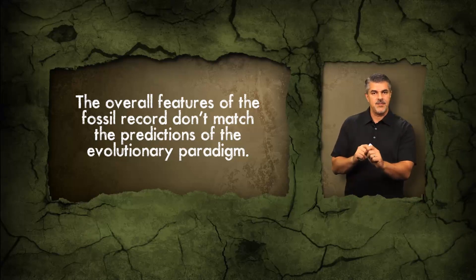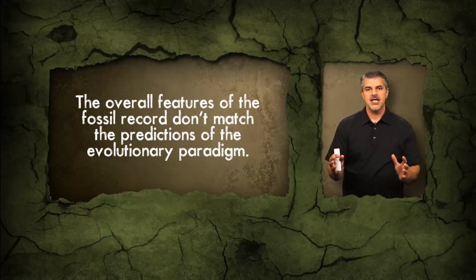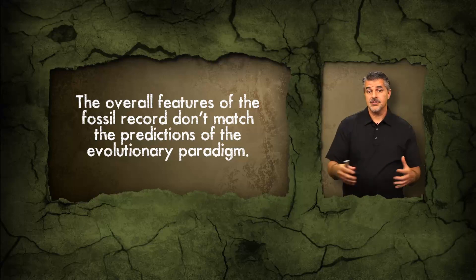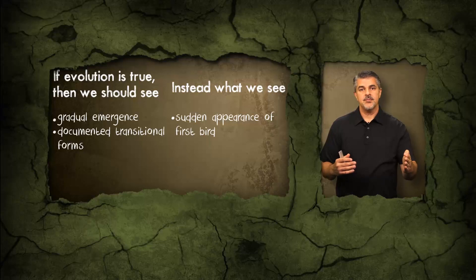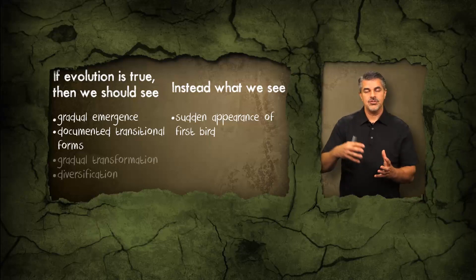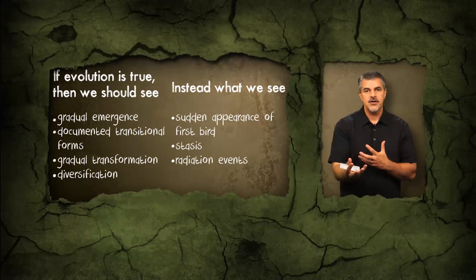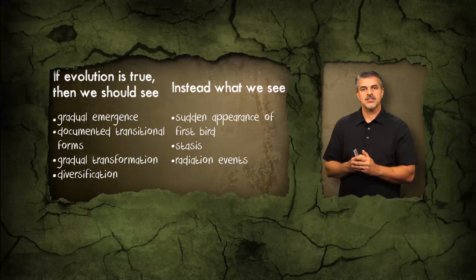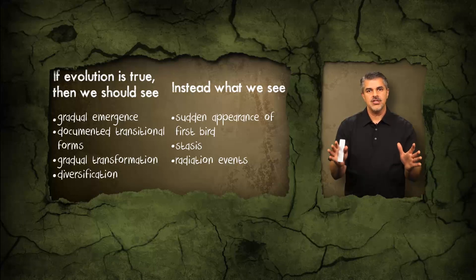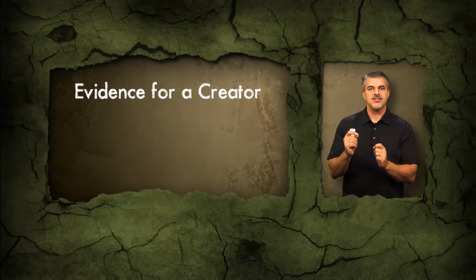If a creator is responsible, we'd expect explosive and sudden appearances followed by explosive diversification. So when we look at the fossil record with respect to the natural history of birds, it doesn't look like we should expect it to look if evolution accounts for life's history. Instead of seeing a gradual emergence of the very first birds with well-documented transitional forms, we see the sudden appearance of Archaeopteryx. Following that, we don't see gradual evolutionary transformation and diversification into more modern birds, but rather stasis followed by explosive radiation events in three separate instances — the last being around 60 million years ago with the introduction of modern birds.